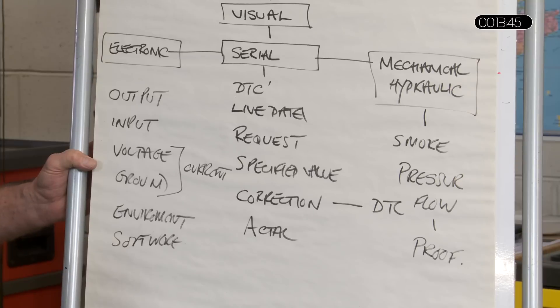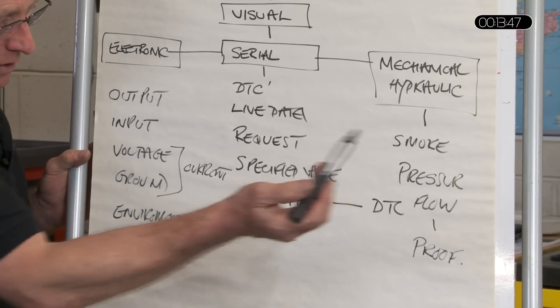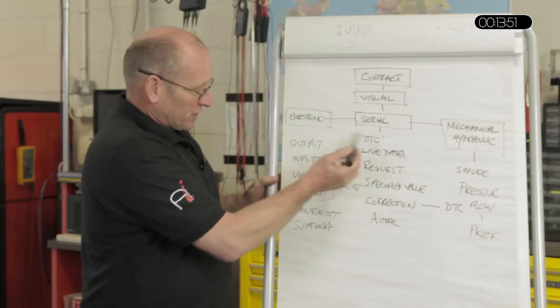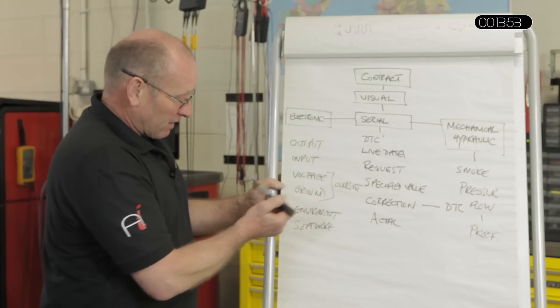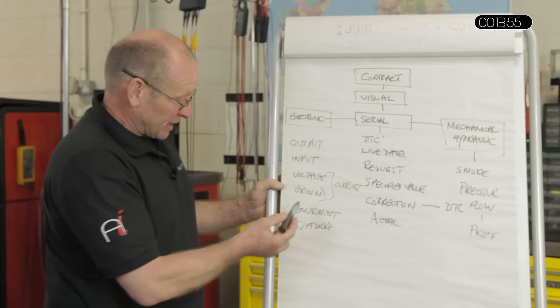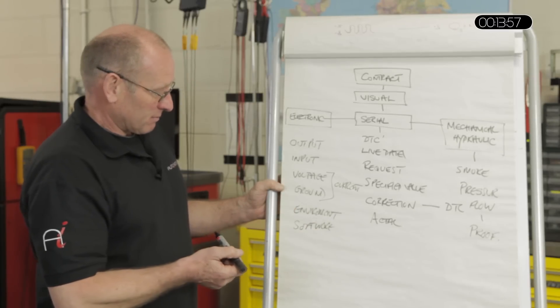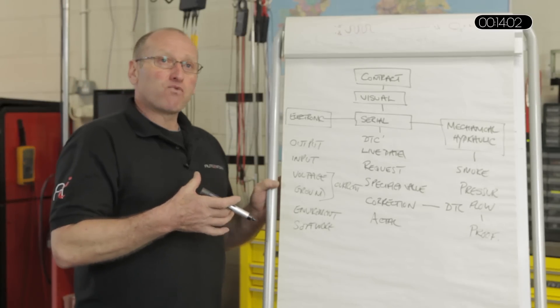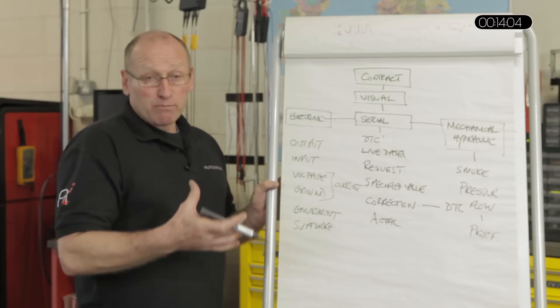Has the environment been affected because of a blockage increasing pressure? Could the DTC be due to the fact that we have a voltage supply problem to the sensor or a poor ground? Could it be a software problem? Perhaps the component requires readaption.